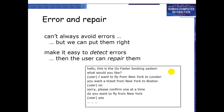For example, the Recycle Bin on a computer exists so that if you accidentally delete a file and later realize it was important, you can restore it from the Recycle Bin. This is error and repair. We can't always prevent errors but we can make them easy to detect and allow the user to repair them through the interface.